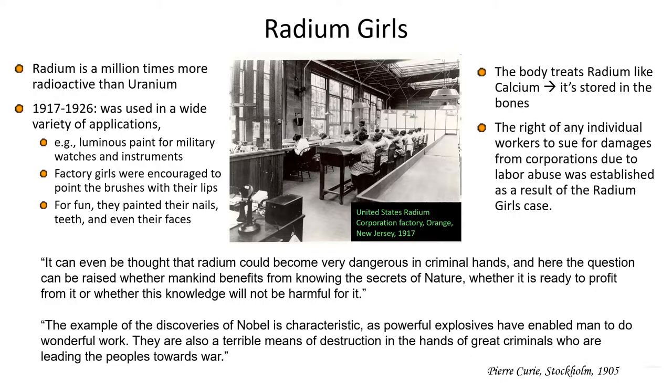We see Pierre Curie in 1905 saying and speculating about both the good and the evil that could come from these forms of material, radioactive material. It can even be thought that radium could become very dangerous in criminal hands. And here the question can be raised whether mankind benefits from knowing the secrets of nature, whether it is ready to profit from it, or whether this knowledge will not be harmful for it. And again, he said, the discoveries of Nobel is characteristic as powerful explosives have enabled man to do wonderful work. They are also a terrible means of destruction in the hands of great criminals who are leading the peoples towards war. So we see in this example how the power of physics, the power of the atom, could be used for good or for ill.